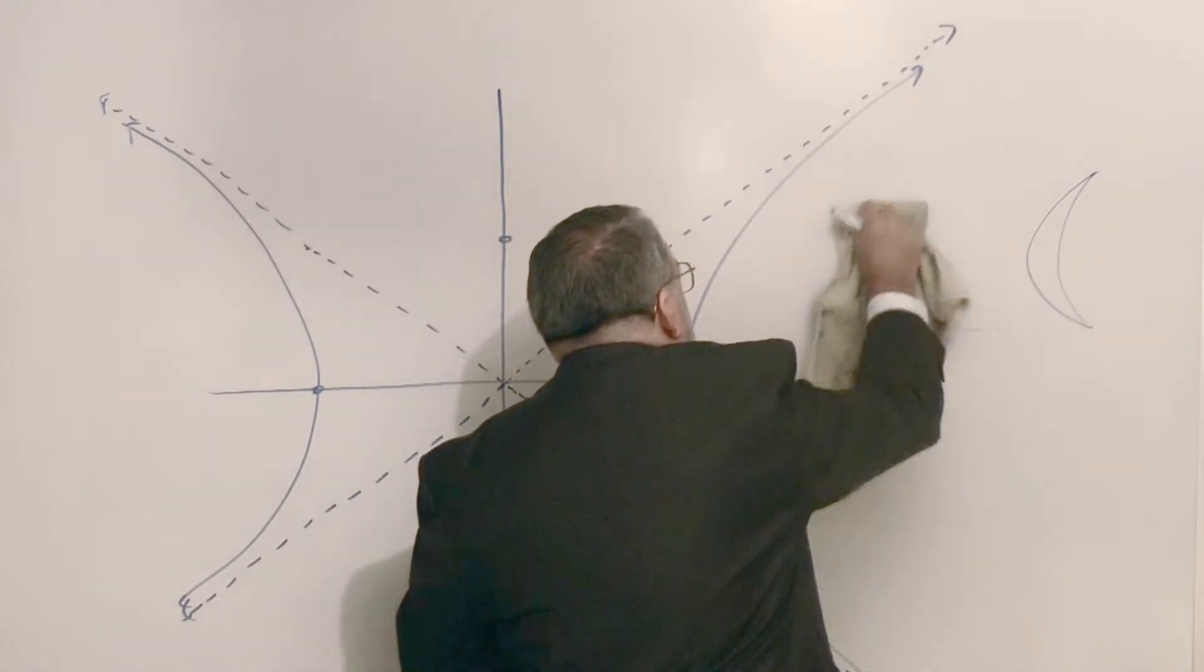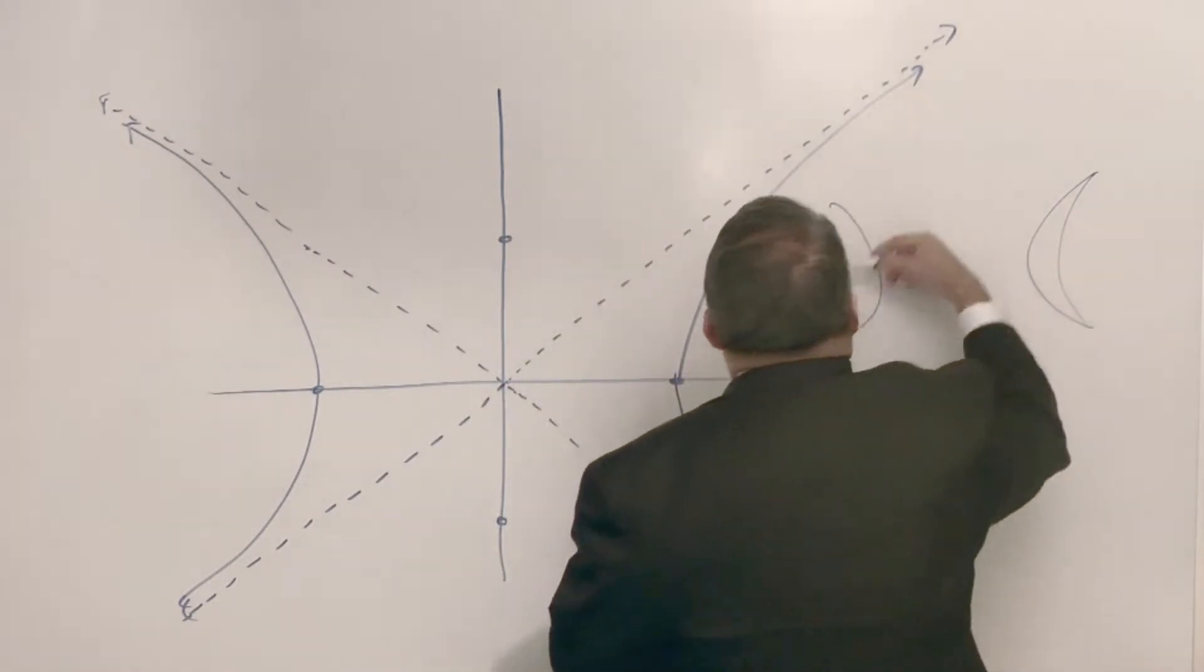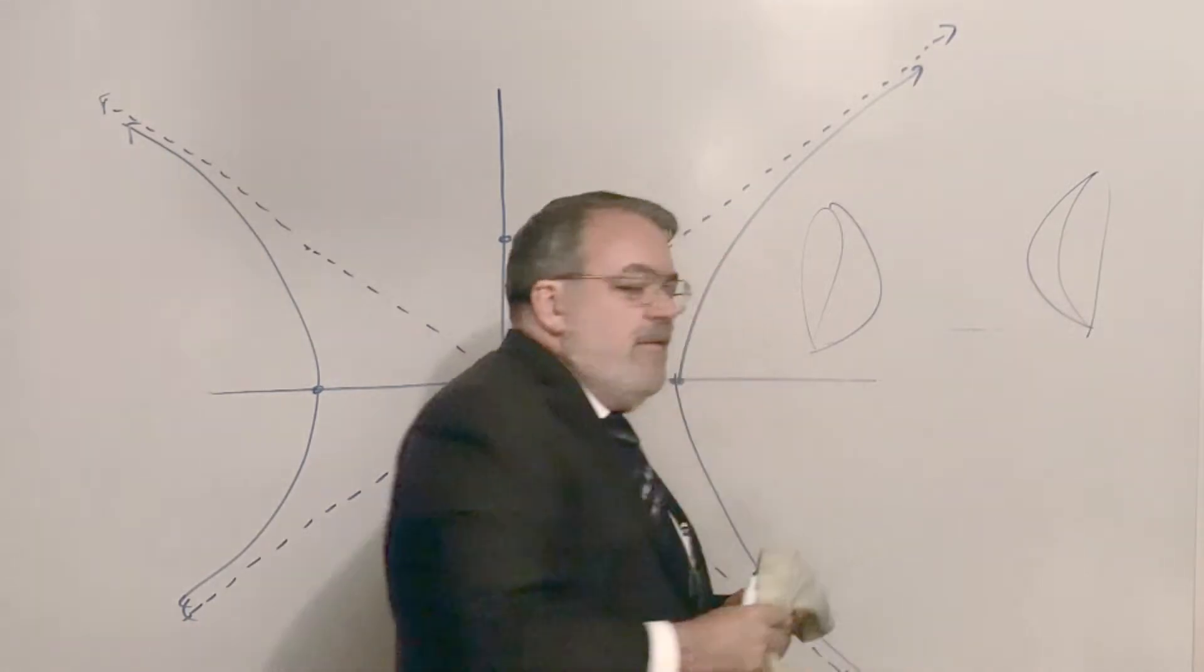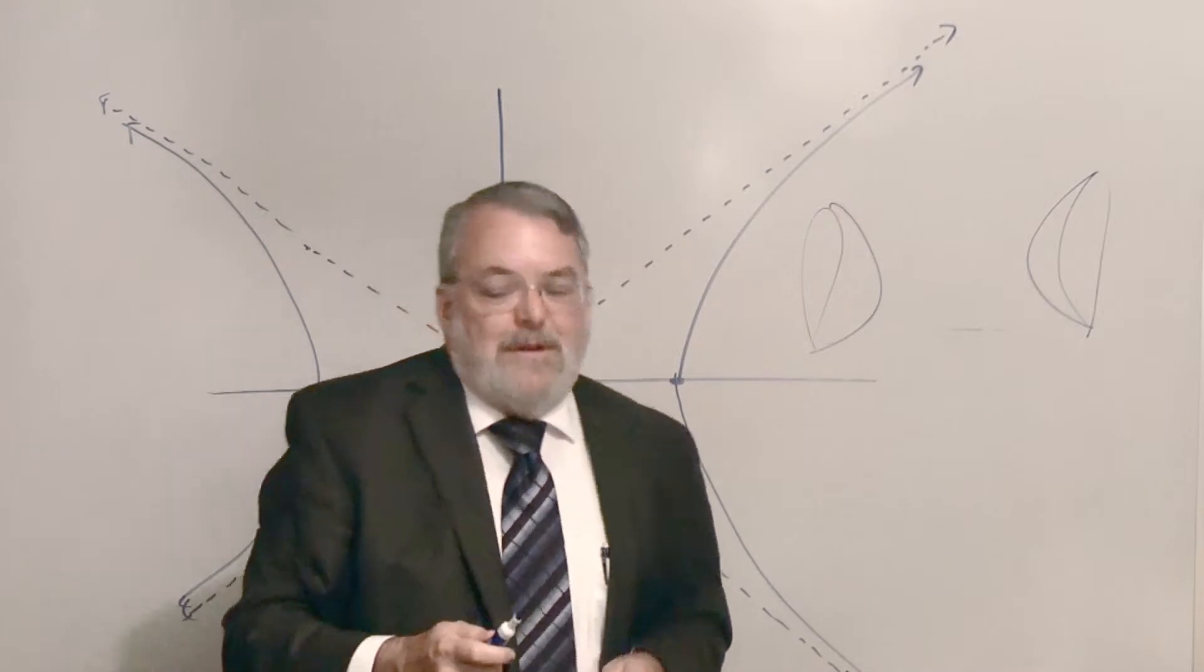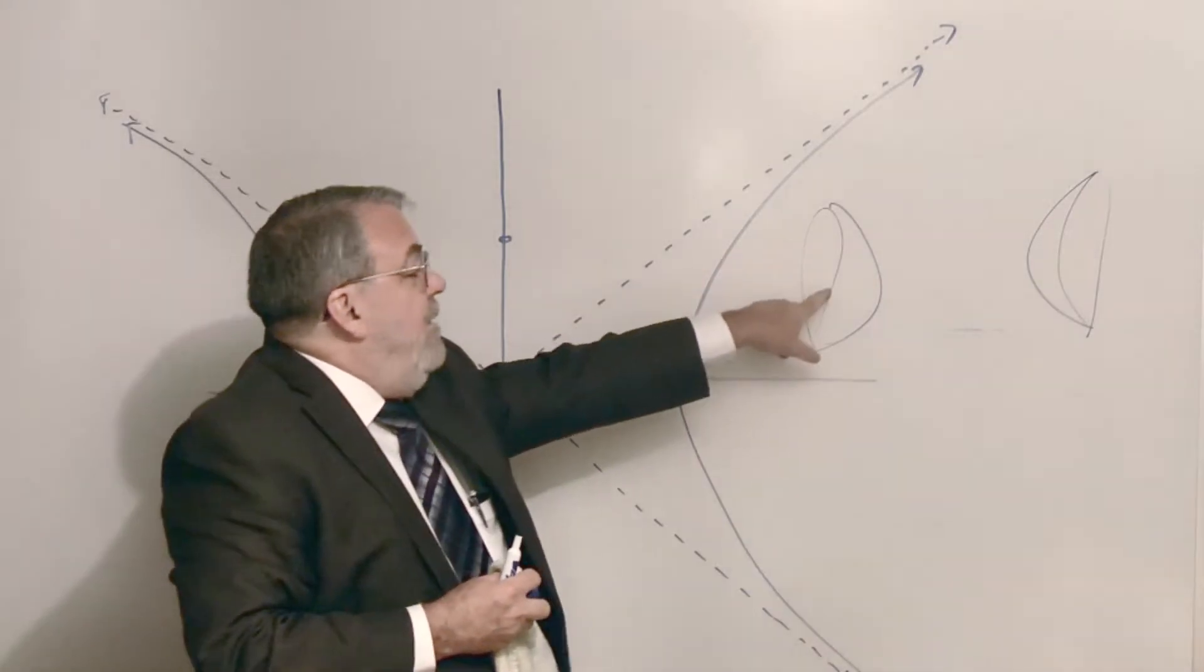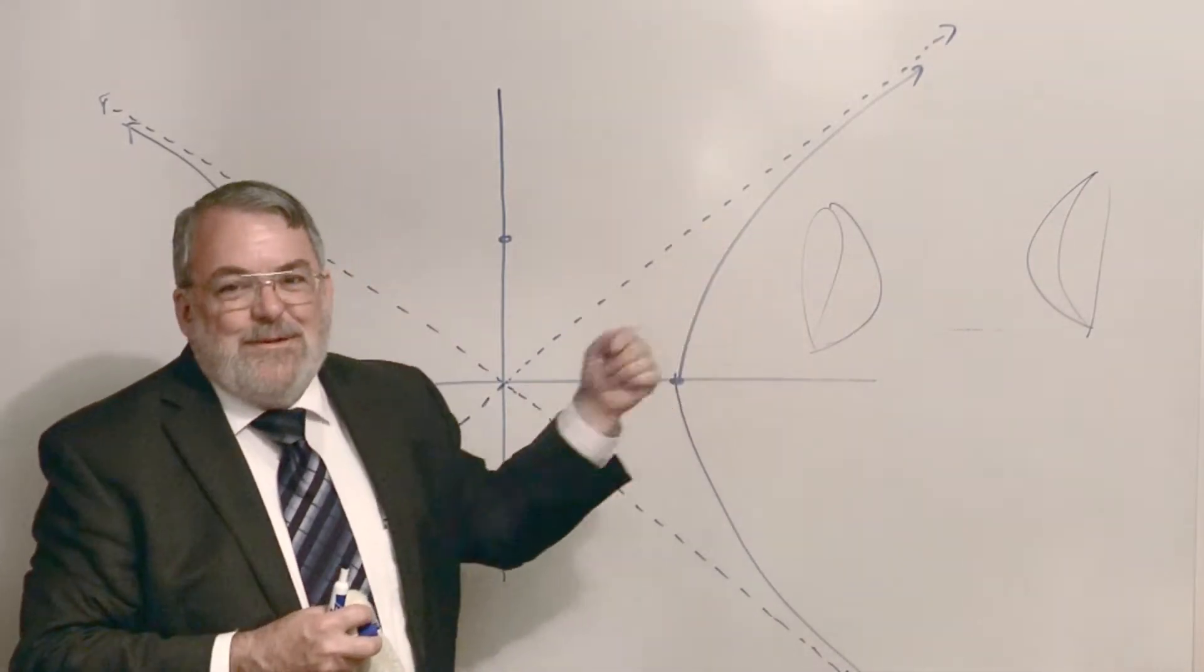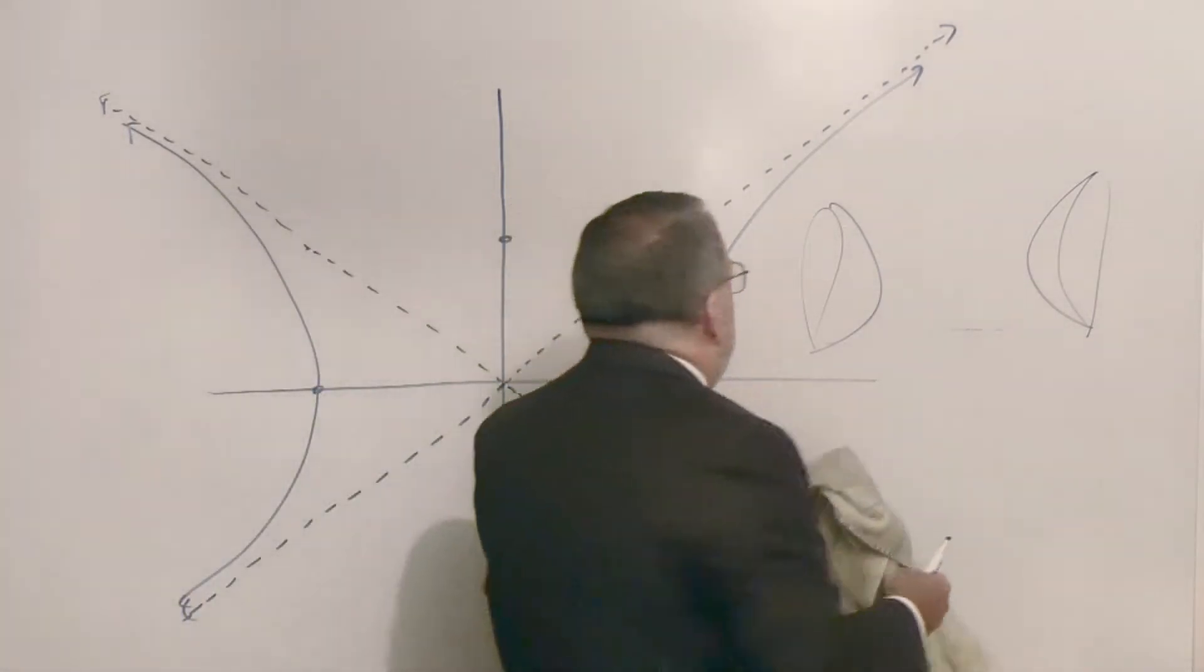I can't seem to draw this worth a darn. Anyway, there's a dish, there's a dish. But they're rotated. Imagine a dish pointed this way and a dish pointed that way. That's a hyperboloid of two sheets. I don't know anything off the top of my head where that would be good, except that apparently was what was used in the Indianapolis Children's Museum back in 1994 for the whispering gallery effect. Hyperboloid of two sheets.